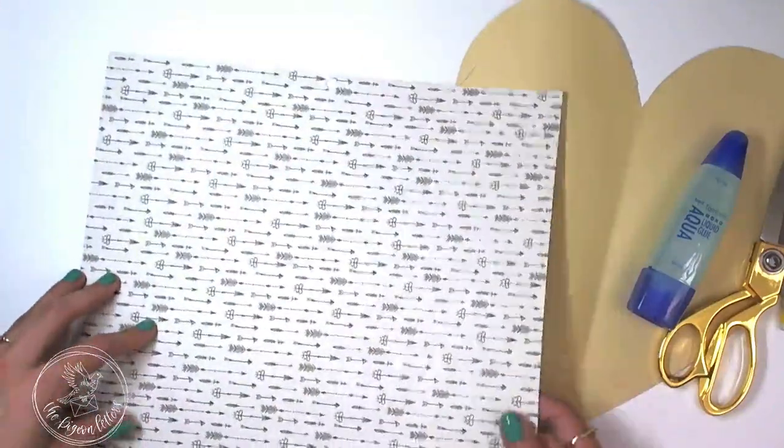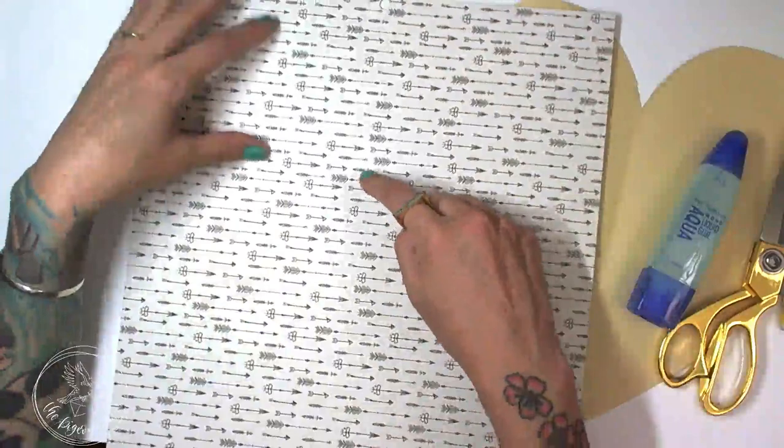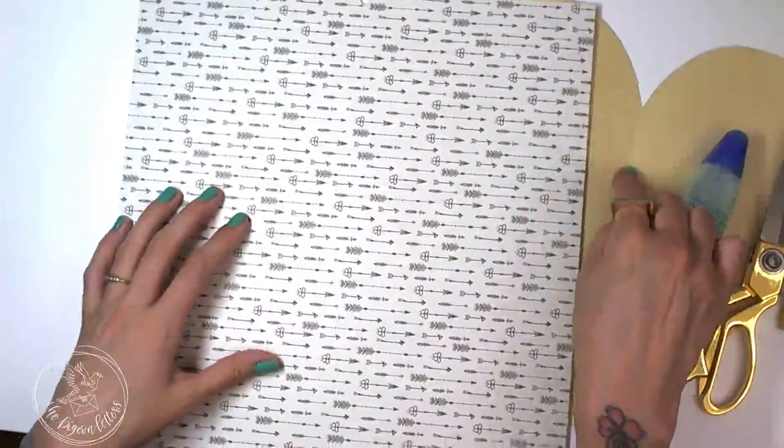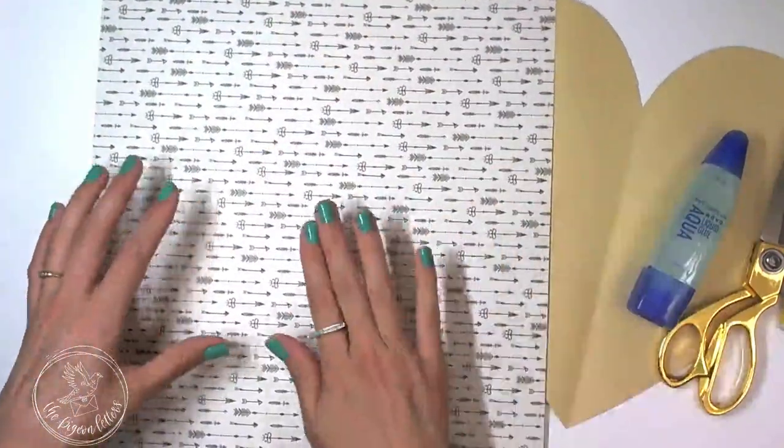Otherwise what you can do is fold it in half, crease it, and then draw that line. But the reason why I like to have the template is because I don't want that crease in my envelope.